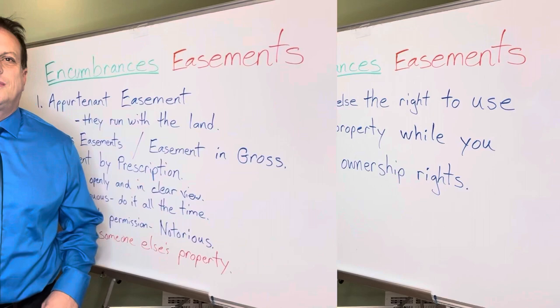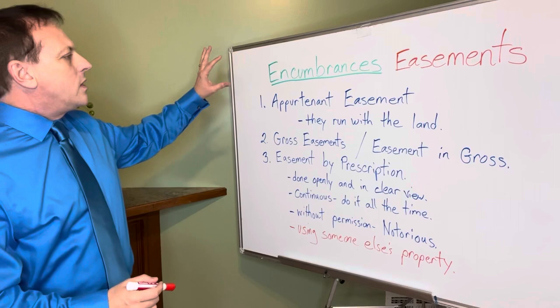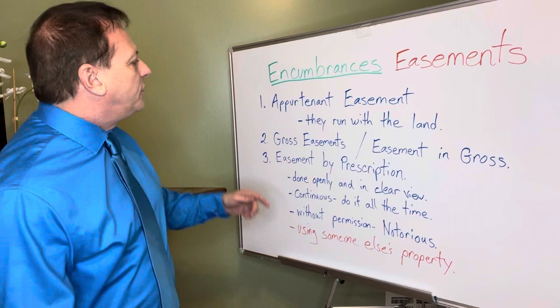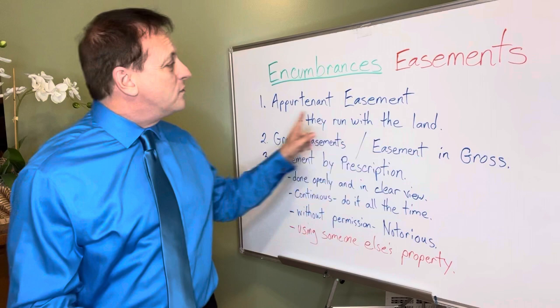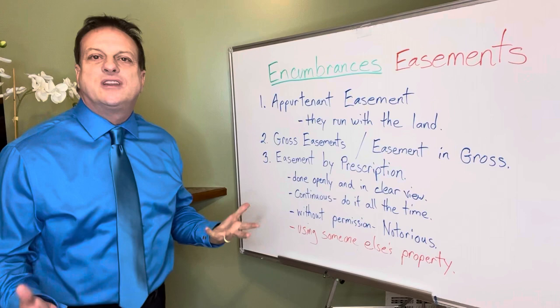There are three types of easements. The most common one we think of when selling property is the appurtenant easement. You've got two vocabulary words here: easement, which you just learned, and now let's talk about what an appurtenance is.